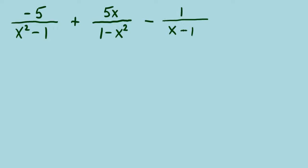We will factor each denominator. Starting with x squared minus 1 — it's a difference of squares, so we factor it as (x + 1)(x − 1). How about our middle denominator? Did you observe that we have a set of opposites: x squared minus 1 over here, with 1 minus x squared there? Spotting opposites means we can fix that denominator — turn it into x squared minus 1 — as long as we flip the sign of all the terms in the numerator also.